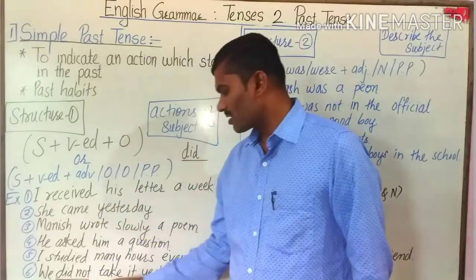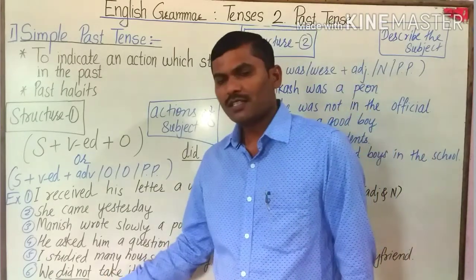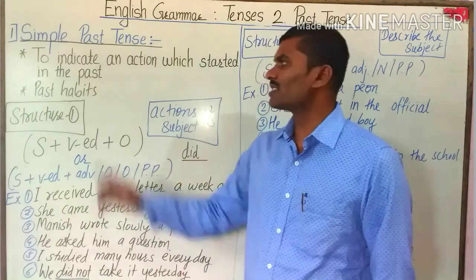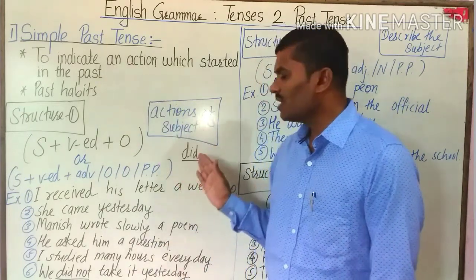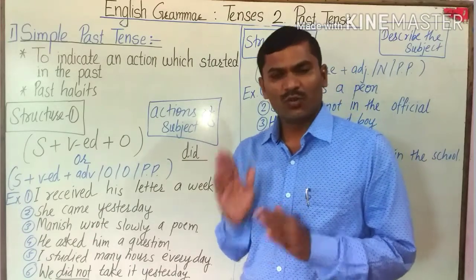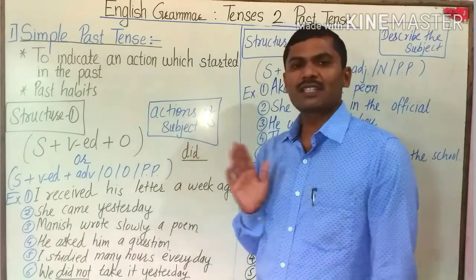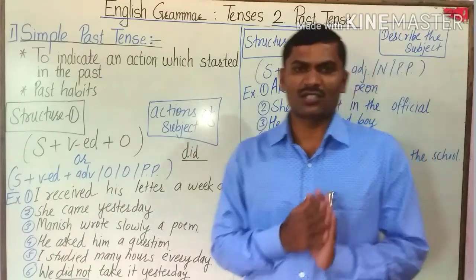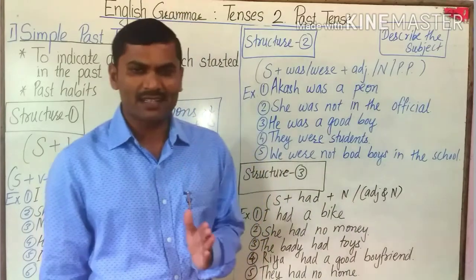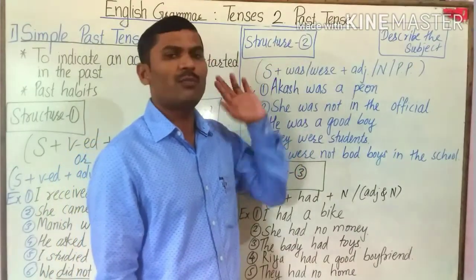'We did not take it yesterday.' Here, 'did not' indicates that this sentence is negative in simple past tense. We use the auxiliary 'did' to make verbal questions, and also 'did not' to make the sentence negative in its structure.